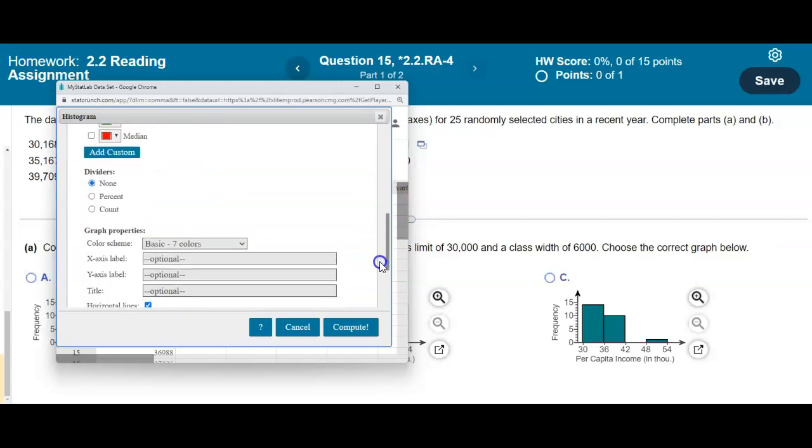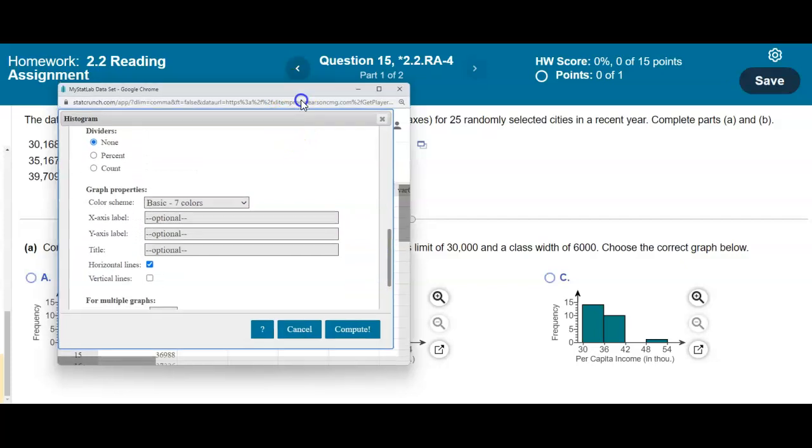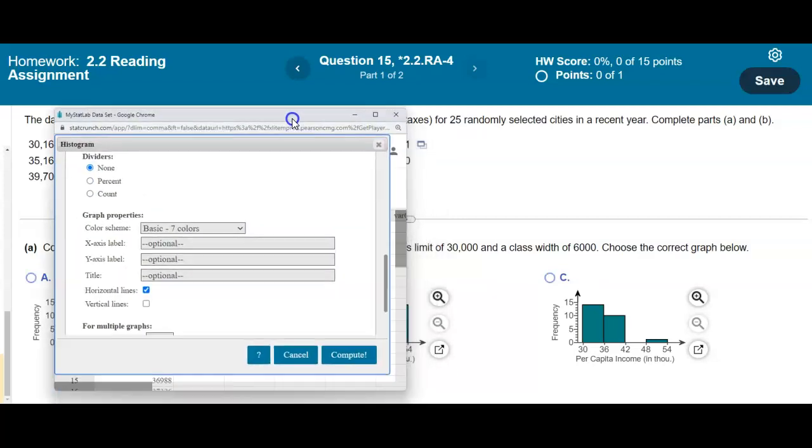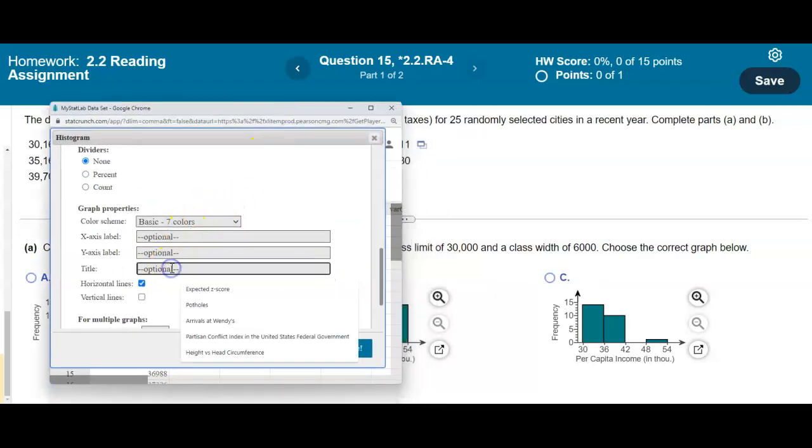And then we're going to come down here. And then we can either title it. We can say per capita disposable income. So we can come down here and title it as per capita disposable income.